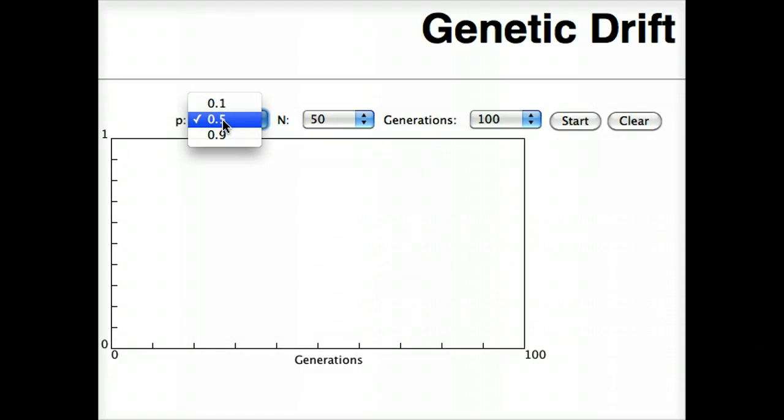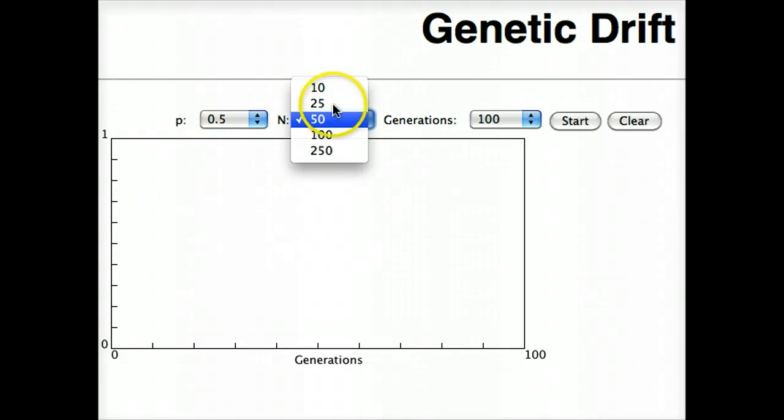The next thing you have to do is decide the size of your population. That's this button. You can go from a very small population, just 10 organisms, to a larger one, 250. We'll start at 50 for this experiment.